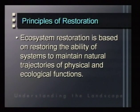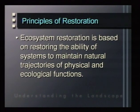A first principle of ecosystem restoration is that it is based on restoring the ability of systems to maintain natural trajectories of physical and ecological functions. That implies two major factors: first, it is a trajectory, not a fixed state — these systems are always changing, and the question is can we move them toward a desirable trajectory of change. Second, we're not trying to build restoration-addicted systems; we're trying to build systems that can maintain their own processes, giving them the biological or physical components that allow the system to shape itself.